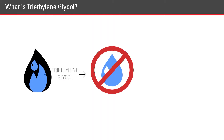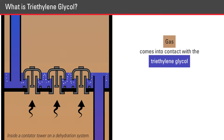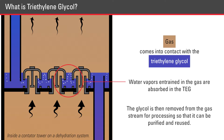To take the water out of natural gas, producers use a liquid called triethylene glycol, also known as TEG. When gas comes into contact with the triethylene glycol, the water vapors entrained in the gas are absorbed in the TEG. In effect, the glycol soaks up the water. The glycol is then removed from the gas stream for processing so that it can be purified and reused.